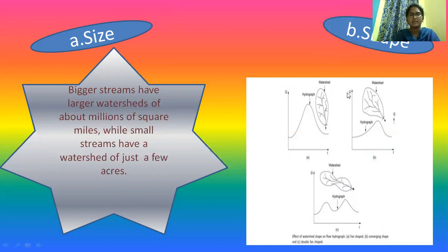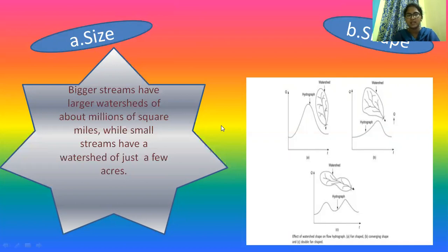Next comes Shape. Different types of shapes include elongated, square, rectangular, triangular, circular, oval, leaf shape, and clam shape. These can broadly be grouped into narrow watersheds and circular watersheds. The shape of the watershed mainly affects the hydrograph.